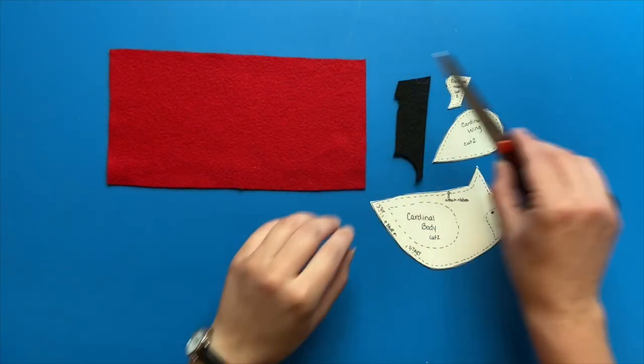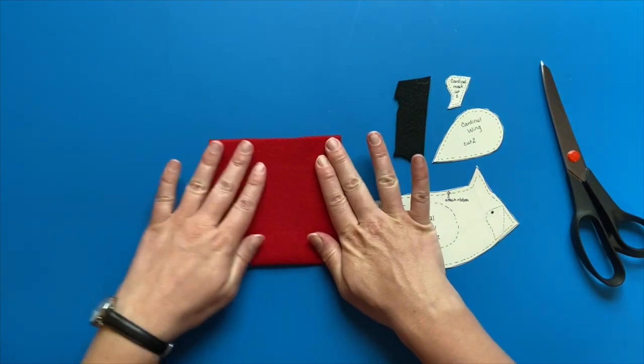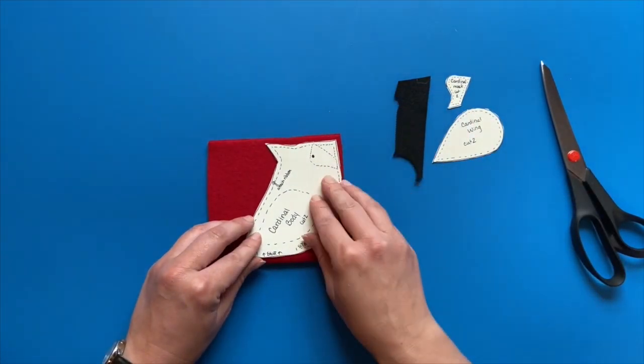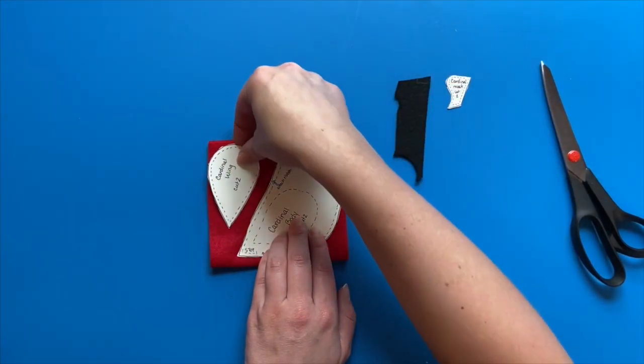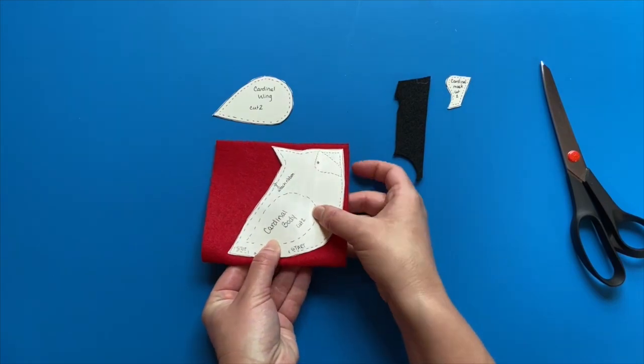After you have cut out your paper pattern, you'll want to use it to cut out your fabric pieces. Here, I'm folding a piece of felt so that I can cut the two sides of the bird body at the same time. See how I make sure that I can fit both the body and the wings on the fabric before I cut it out.